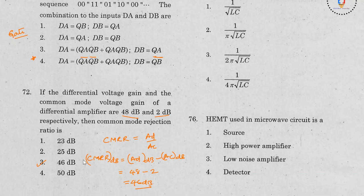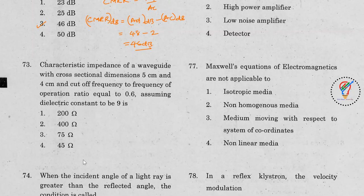Question 73: The characteristic impedance of a waveguide with cross-sectional dimensions 5 cm and 4 cm, with cutoff frequency to operating frequency ratio equal to 0.6, assuming dielectric constant of 9. We need to find the characteristic impedance ZC.